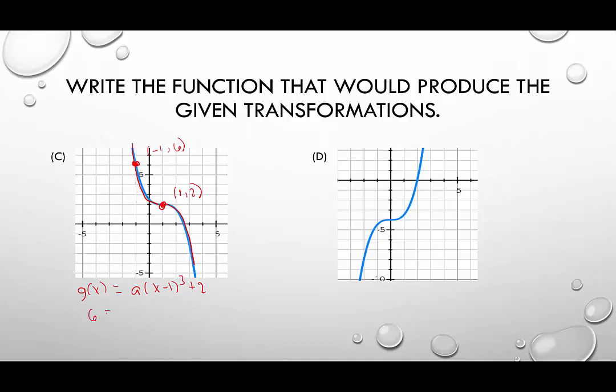So we're going to say 6 equals a times negative 1 minus 1 cubed plus 2. I'm going to subtract 2 from both sides, giving me 4 equals negative 2 cubed, which is negative 8 times a. Divide both sides by negative 8. And we have a equals negative 1 half.